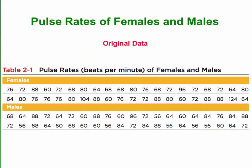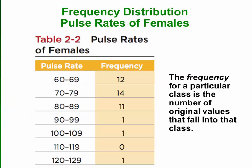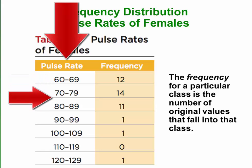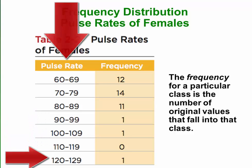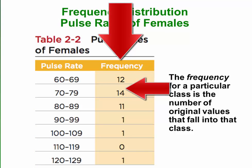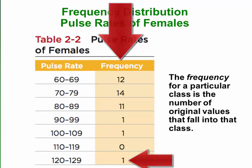Here we see two sets of data, which are not particularly large, representing the pulse rates of females and males. However, looking at them, it's rather difficult to understand or draw any conclusion from the numbers with any ease. This is the frequency distribution or frequency table used for those exact same numbers from the female pulse rates. The numbers in the left-hand column represent the different categories or classes, and the numbers in the right-hand column represent the number of data values found in each one of those categories or classes.